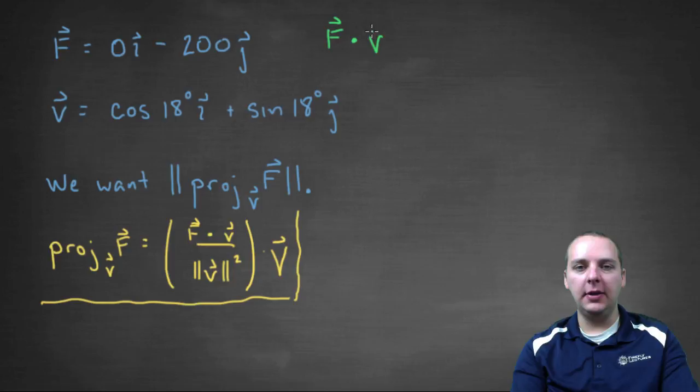First up, let's do F dot V. We'll have zero times cosine 18, plus negative 200 times sine 18. The zero times cosine is zero. That wipes away because zero times anything is zero.